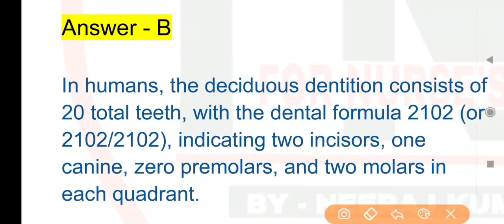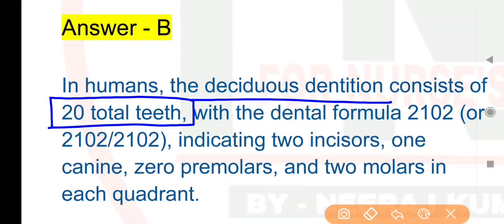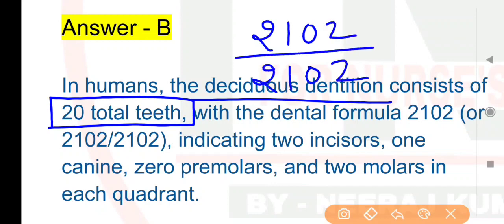Human mein jo temporary teeth hote hain, unhe hum deciduous teeth ya milk teeth ke naam se jaante hain, aur inki kul sankhya 20 hoti hai. Inka formula hai 2102/2102 — yahan do hain incisors, phir canine, phir zero premolars, aur last mein molar teeth.